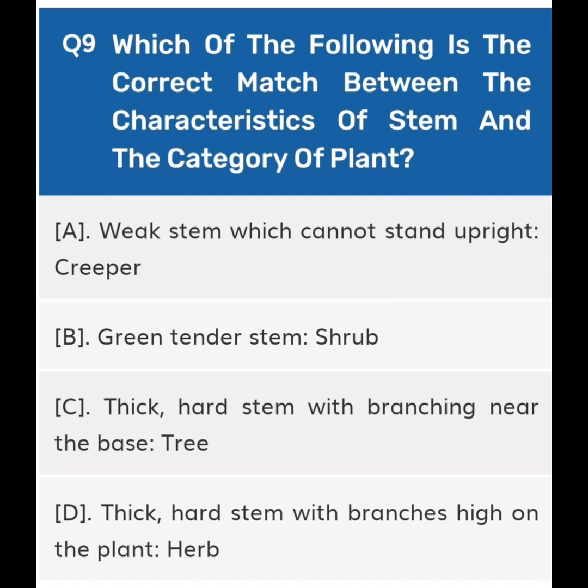Next, question number nine: Which of the following is the correct match between the characteristics of stem and the category of plant? Option A: Weak stem which cannot stand upright — creeper. Option B: Green tender stem — shrub. Option C: Thick hard stem branching near the base — tree. Option D: Thick hard stem with branches high on the plant — herb.